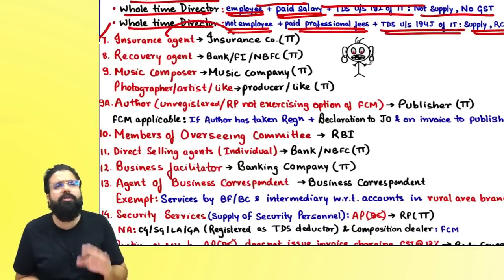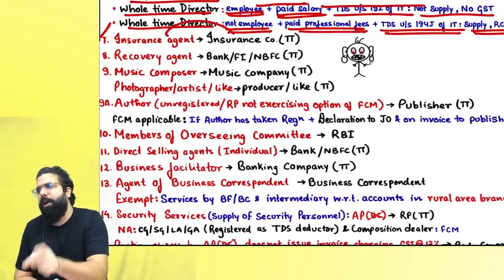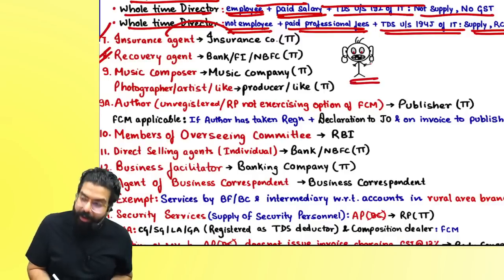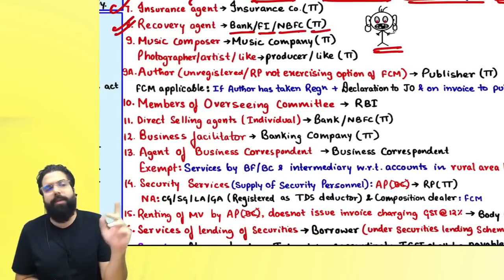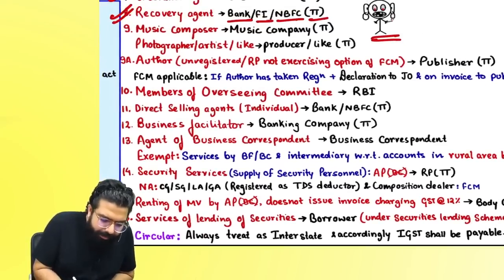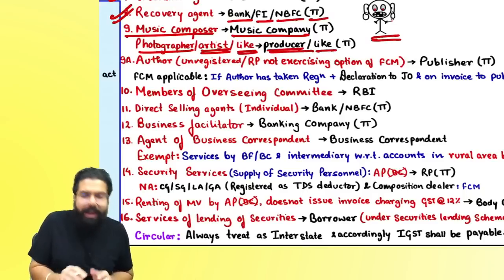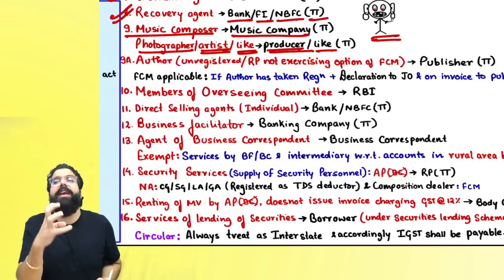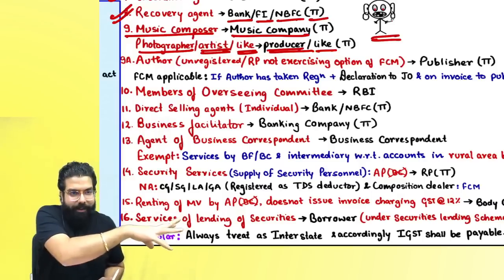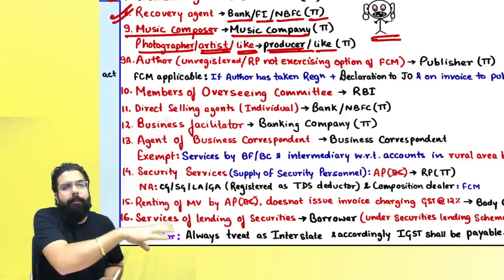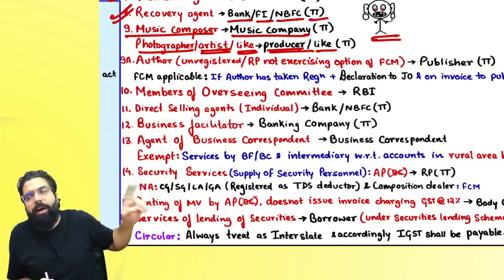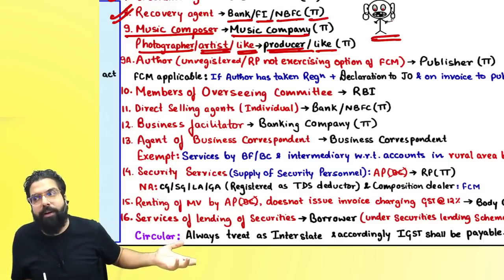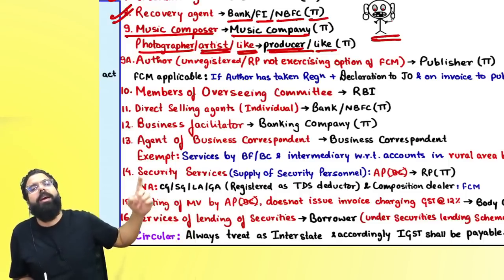Insurance agent providing services to an insurance company in the taxable territory — the insurance company pays GST under RCM. Recovery agent providing services to a bank, financial institution, or NBFC in the taxable territory — the bank, financial institution, or NBFC pays GST under RCM. Music composer, photographer, or artist allowing someone to use their intellectual property right (IPR) against consideration — this is a supply of service and GST must be paid under reverse charge by the music company, or by the person using the IPR of the photographer or artist.